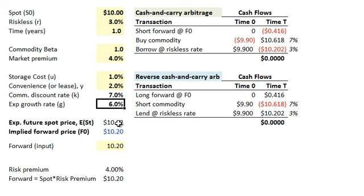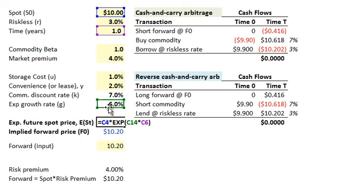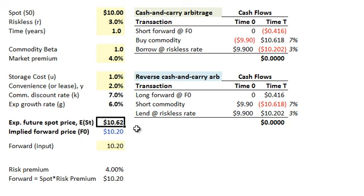With those assumptions, I can now compute two variables that are easy to confuse. First, the expected future spot price — notice the notation E[S_T], meaning in the future. This is something we cannot observe today; we don't know what the price of this consumption commodity will be at the end of the year. But in this simple model, we expect the spot price to be $10 growing at the growth rate of 6%, continuously compounded over one year, giving us our expected future spot price. But we do not observe it today, as opposed to the forward price.